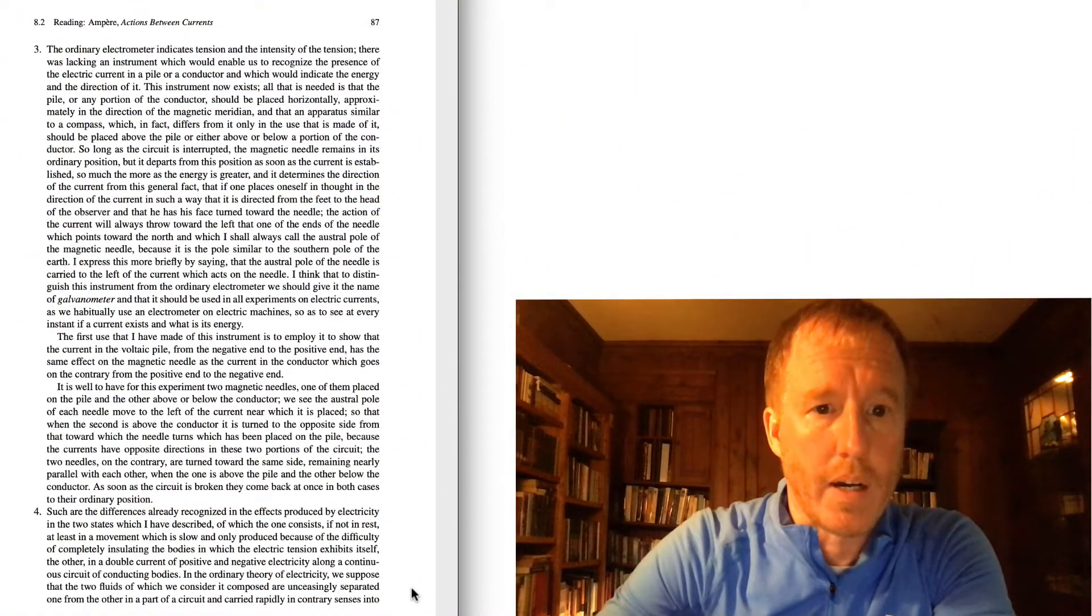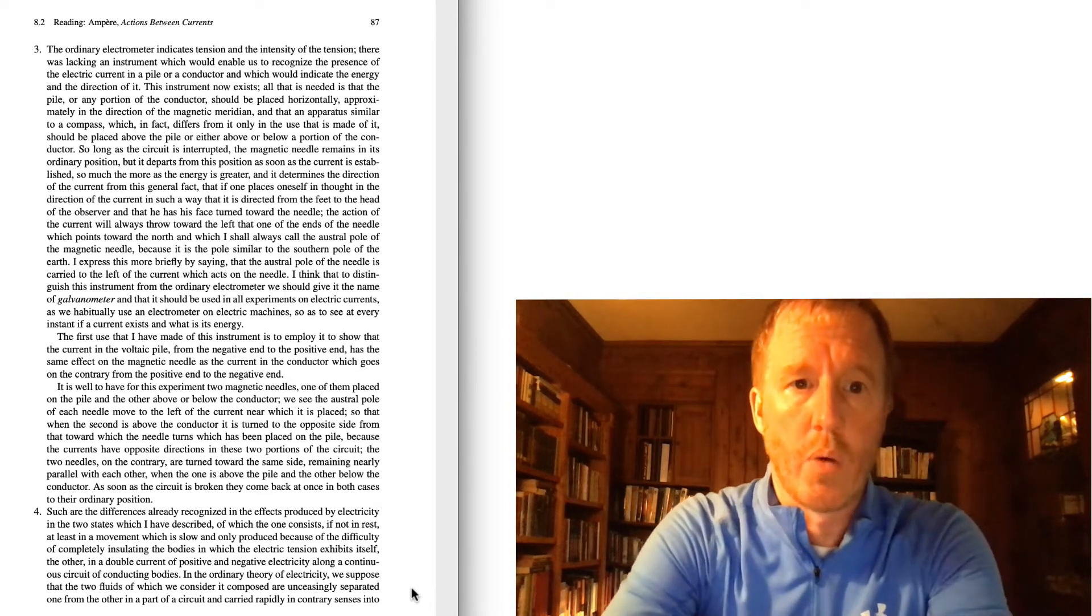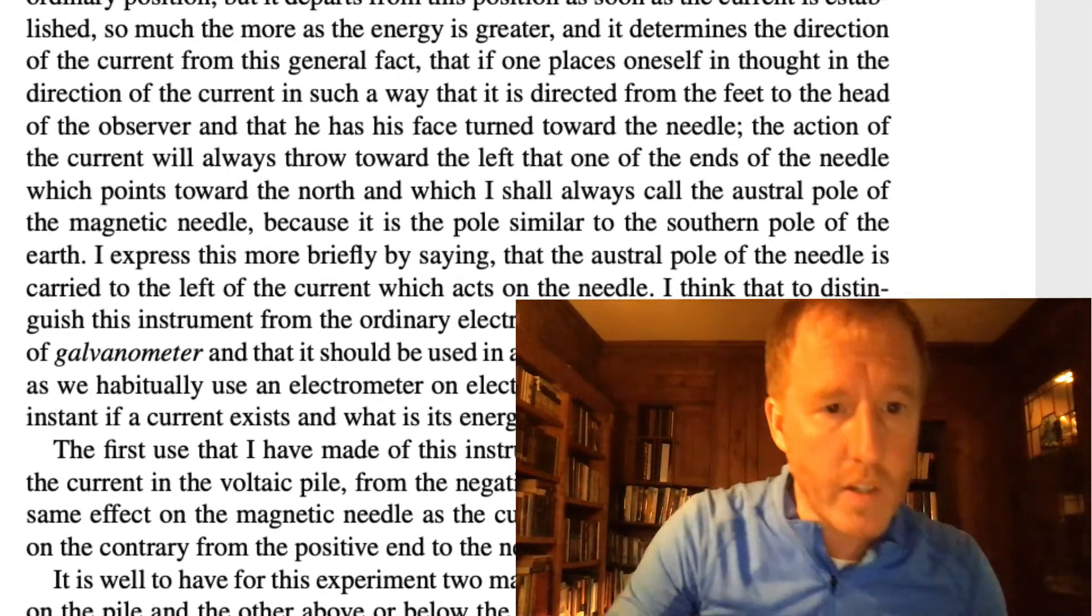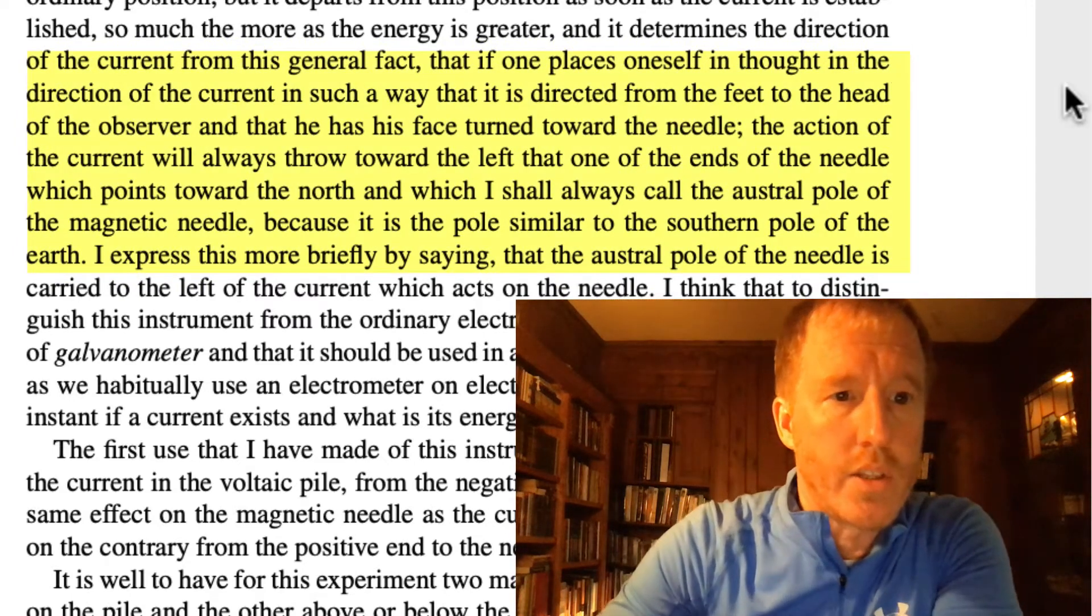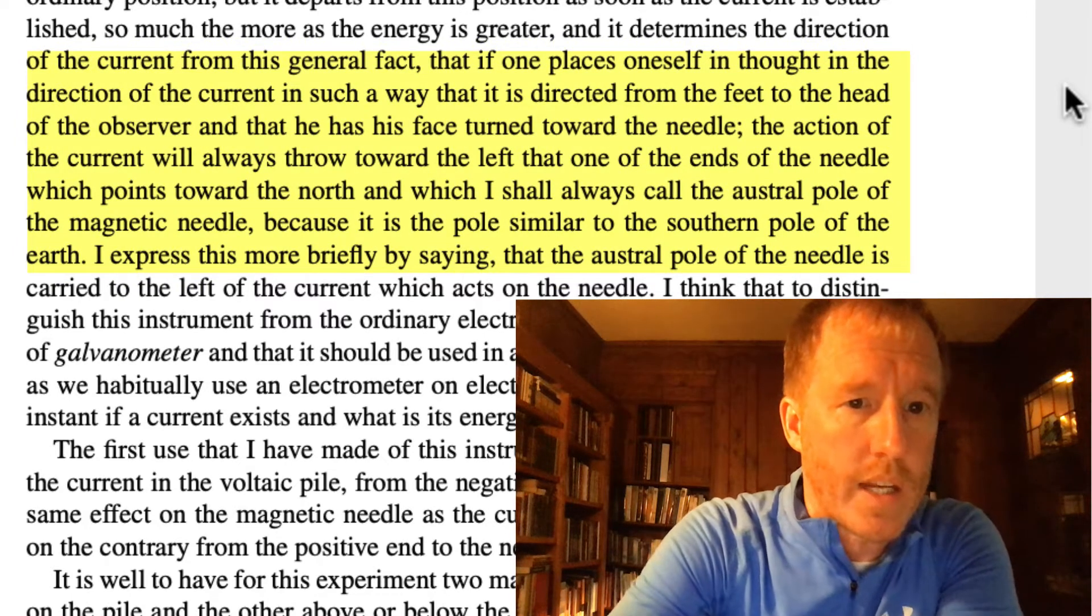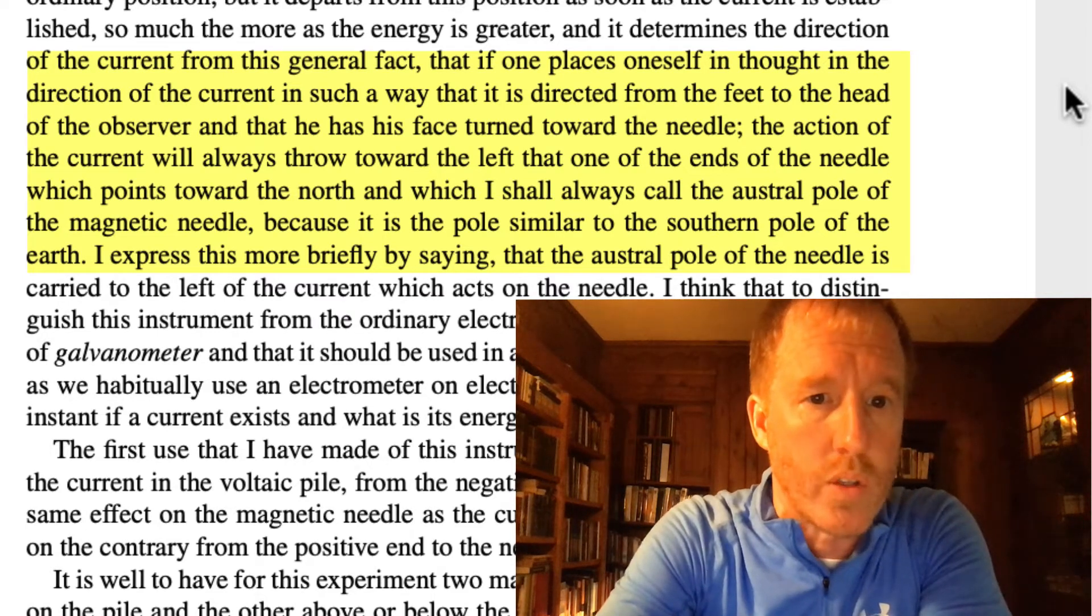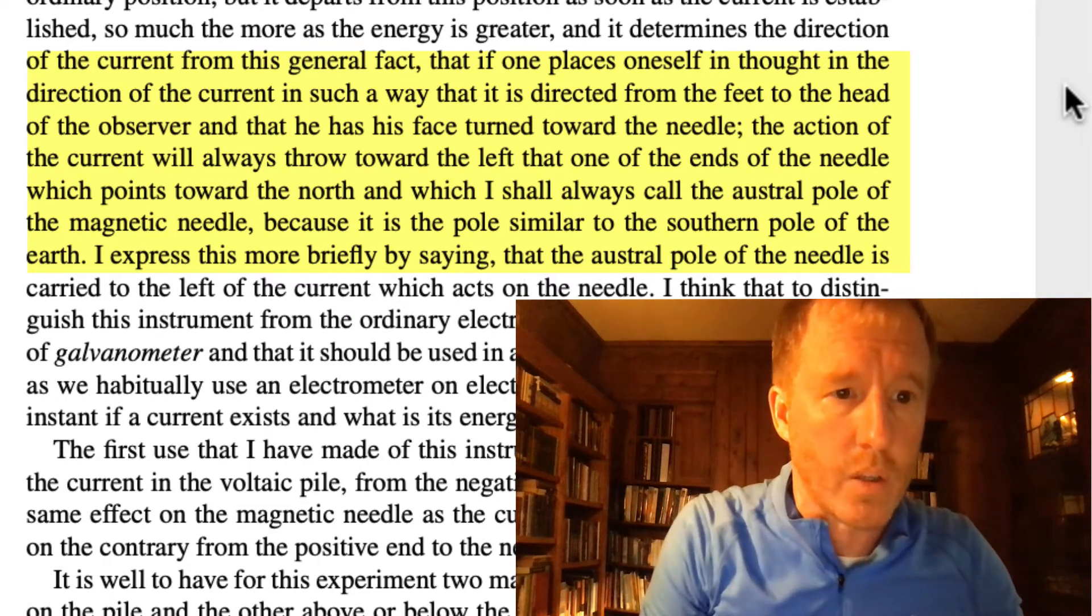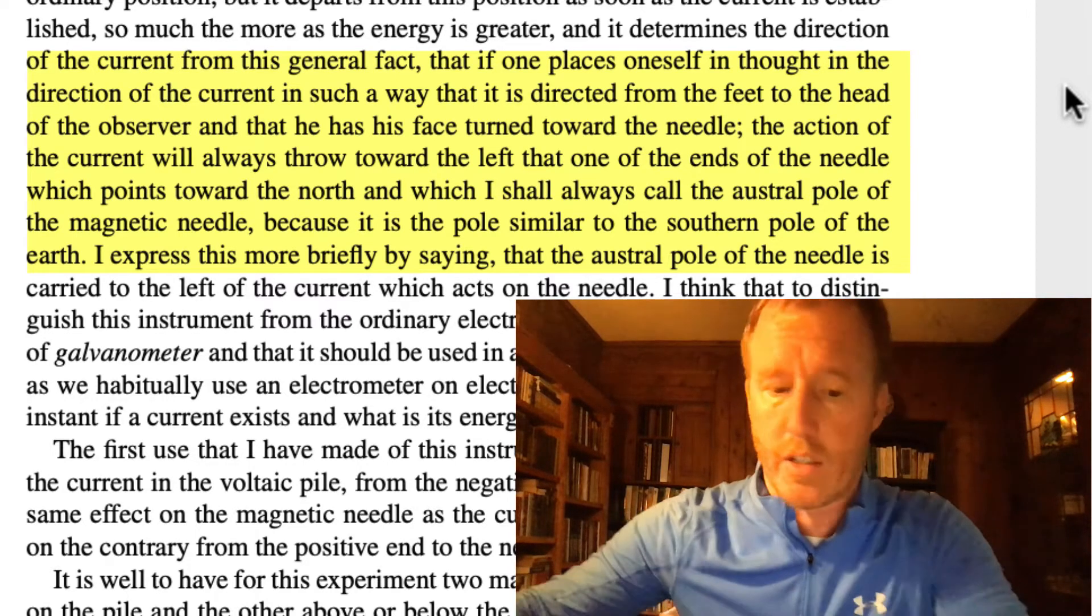If we look at page 87 in the text, he talks about the direction that a compass needle is thrown, as he says, when it is placed near an electric current. And he uses this example. He says that if one places oneself in thought in the direction of the current in such a way that it is directed from the feet to the head of the observer, and that he has his face turned toward the needle, the action of the current will always throw toward the left that one of the ends of the needle which points toward the north, and which I shall always call the austral pole of the magnetic needle.